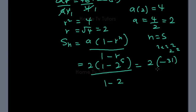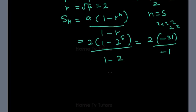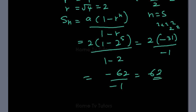So this one is 1 minus 2, which will give us minus 1. So 2 times minus 31 will give us minus 62. When we divide by this minus 1, we now have the sum as 62.